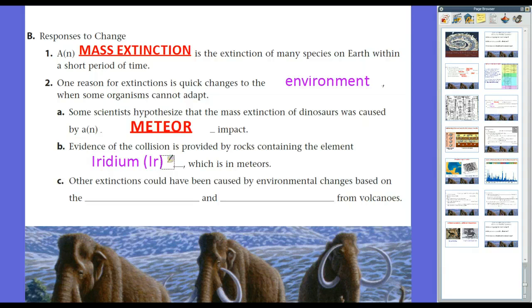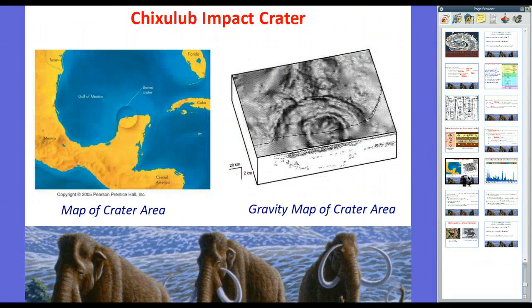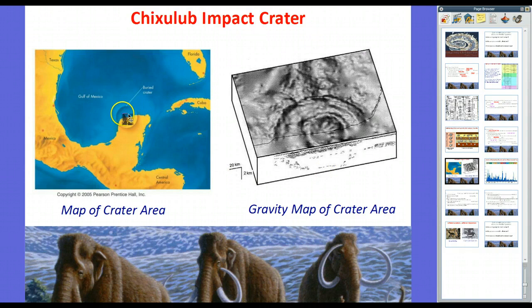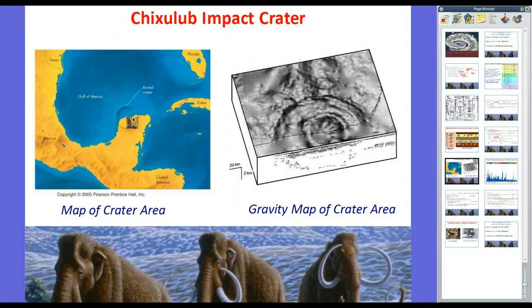Evidence of the collision is provided by rocks containing the element iridium, which is really rare on Earth, but in meteors it's full of it. What they have is called the KPG line in the rock layers. There's a very thin layer that divides the Mesozoic era with the more recent era, the Holocene era. Essentially, in that thin layer of rock, which means it was really short on the geologic timeline, there's a lot of iridium in it.